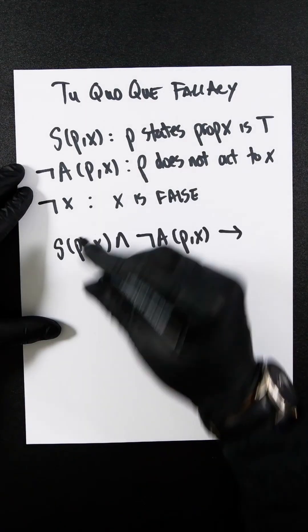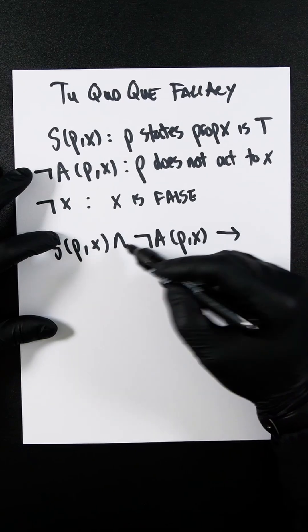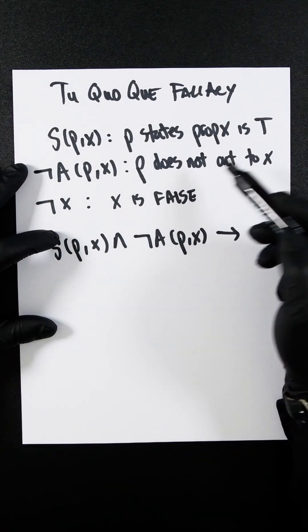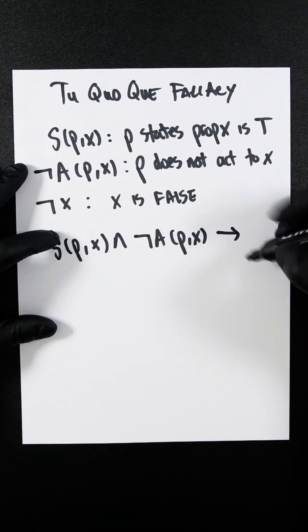so if P states proposition X and P does not act accordingly to X, then X is false.